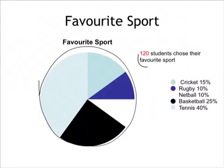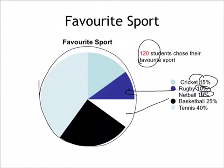Now remember there were 120 students. Now look at the information. Of the 120 students, 15% chose cricket, 10% chose rugby, 10% chose netball, 25% chose basketball and 40% chose tennis.